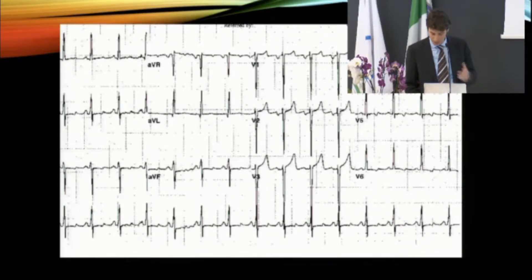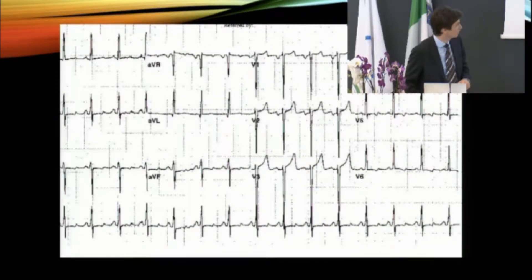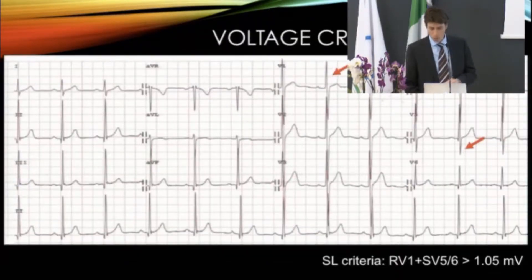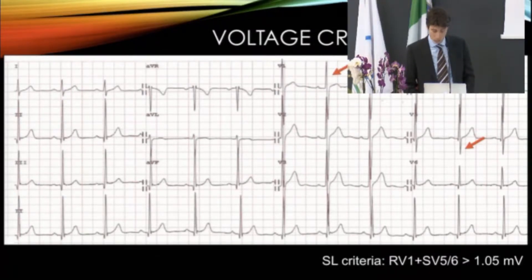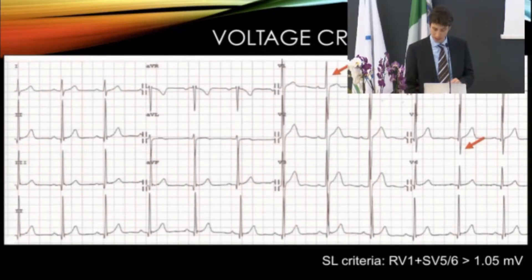Here we have an example showing left atrial enlargement, voltage criteria, and LV strain visualized especially in the lateral leads. Regarding voltage criteria for RVH, the Sokolov-Lyon criteria states that a predominant R-wave in V1 plus a profound S-wave in V5/V6 of more than 10 millimeters are the voltage criteria for RVH. This is a completely normal finding in athletes — we don't have to be worried if we find this.